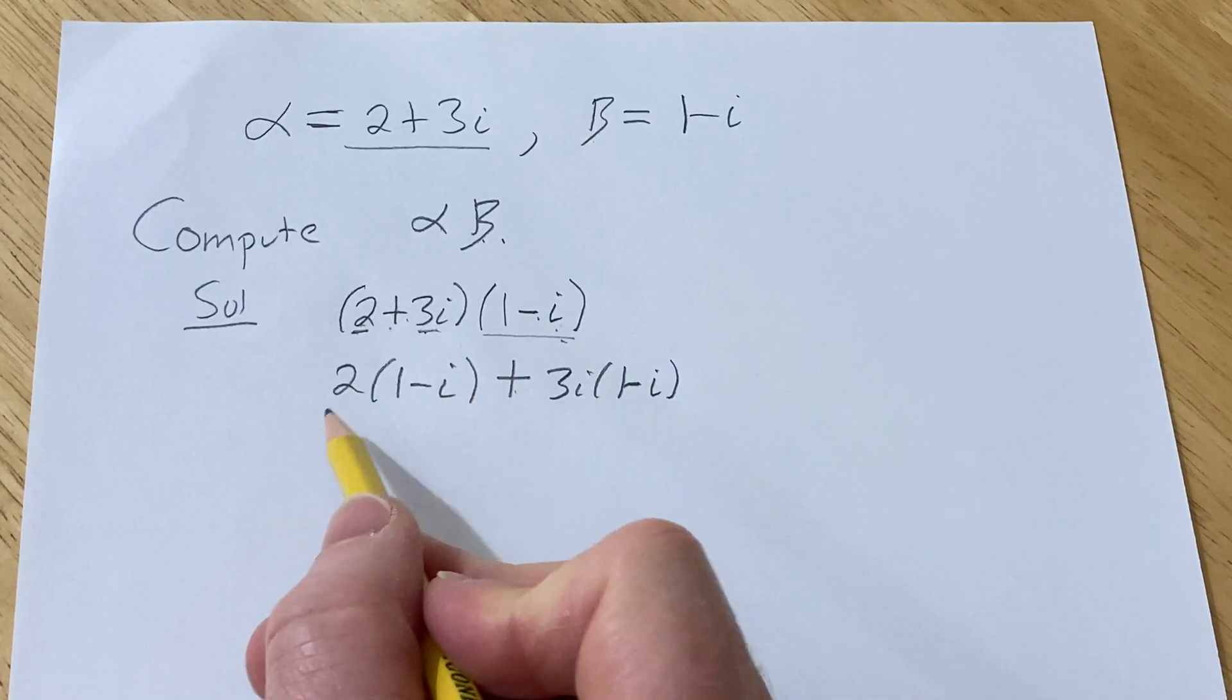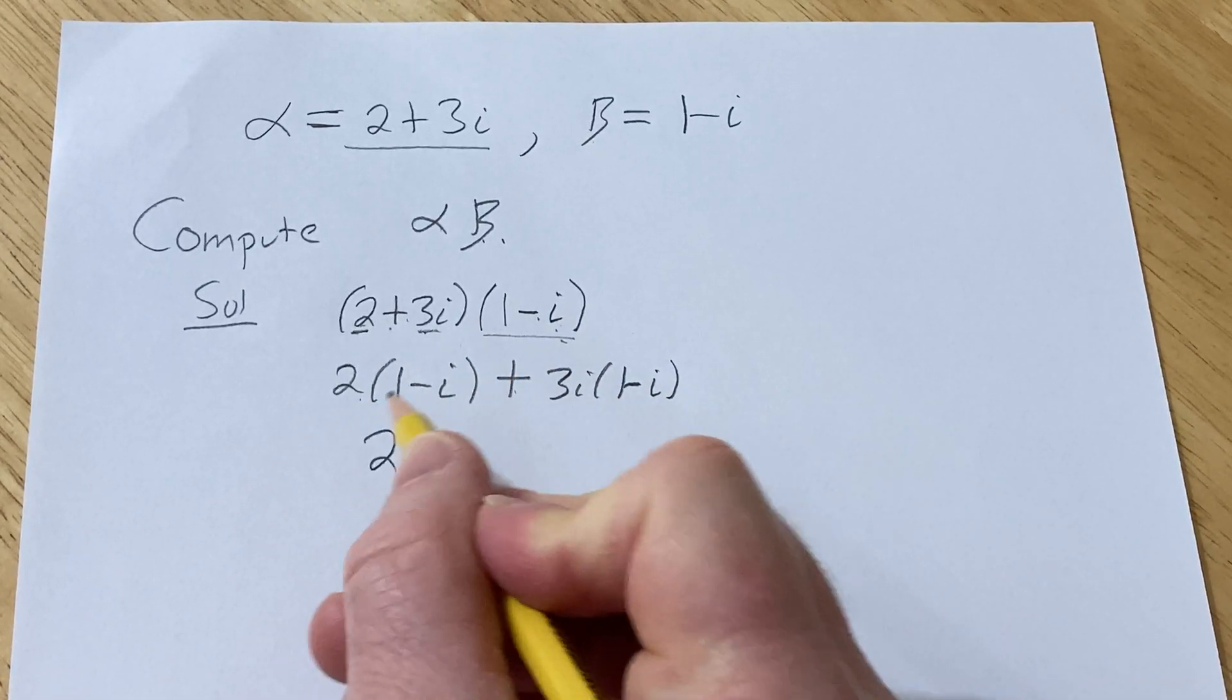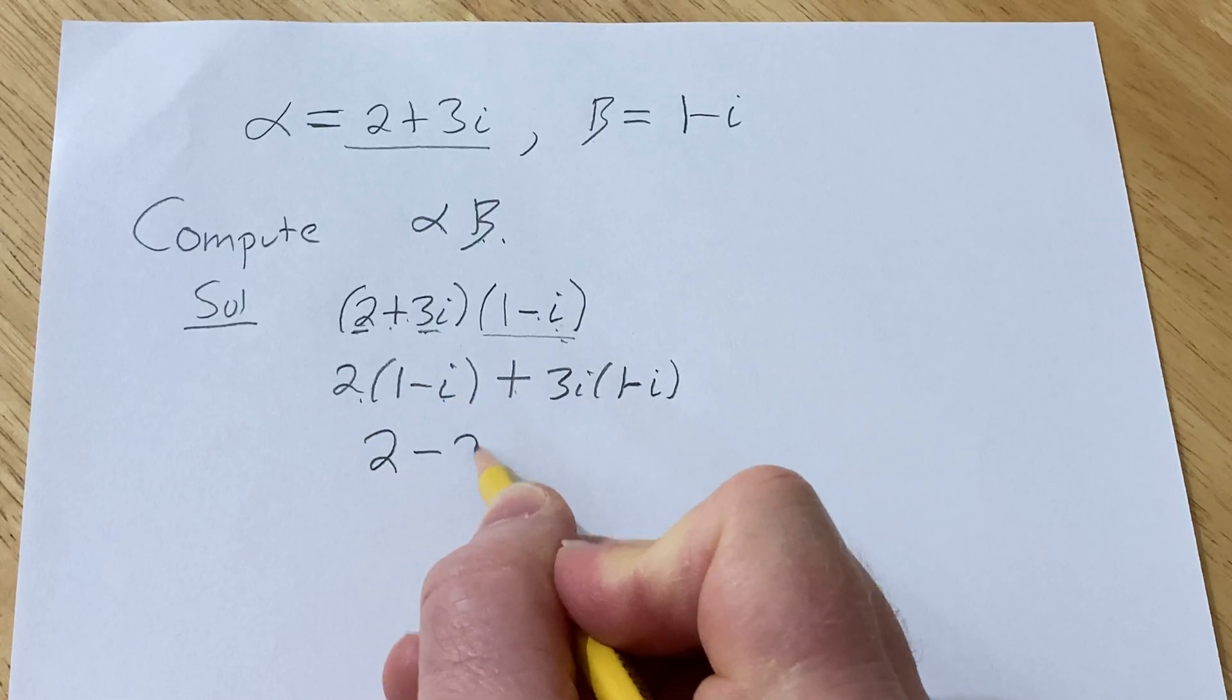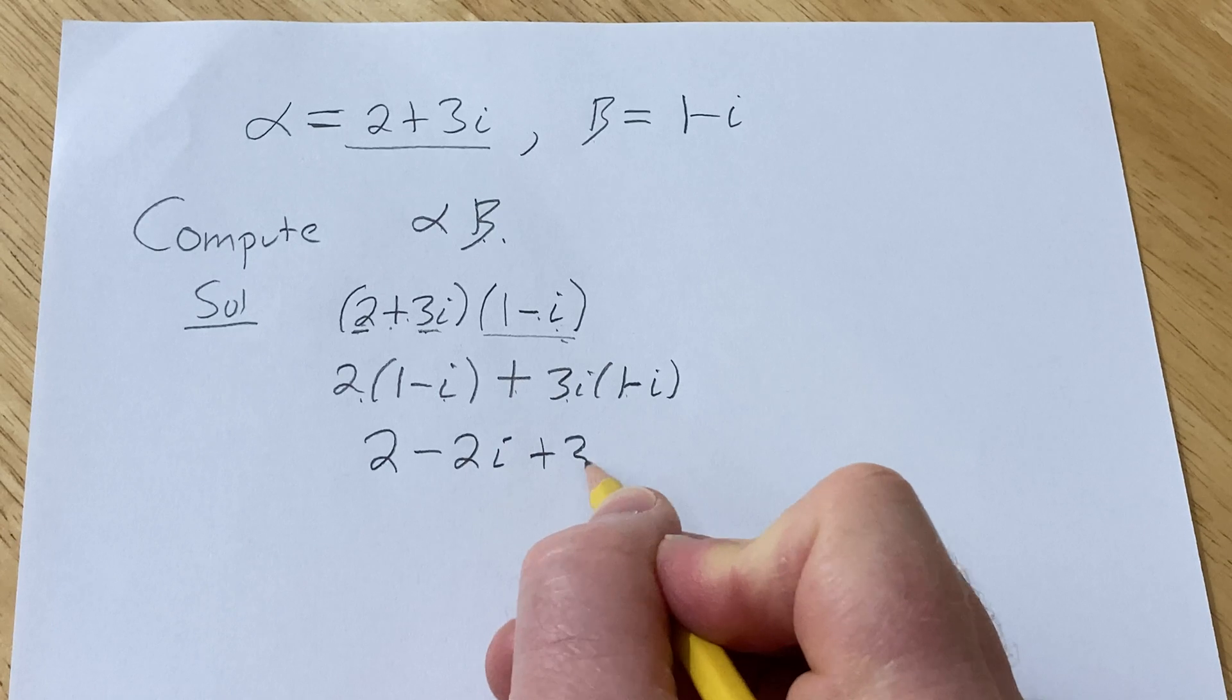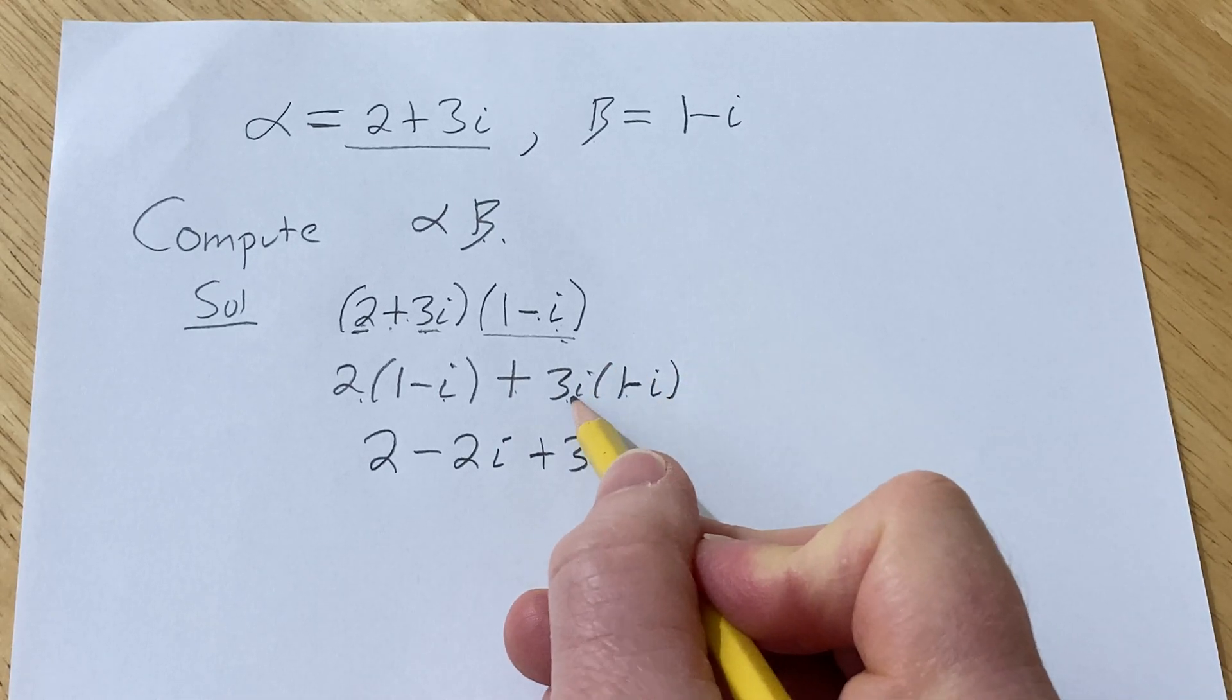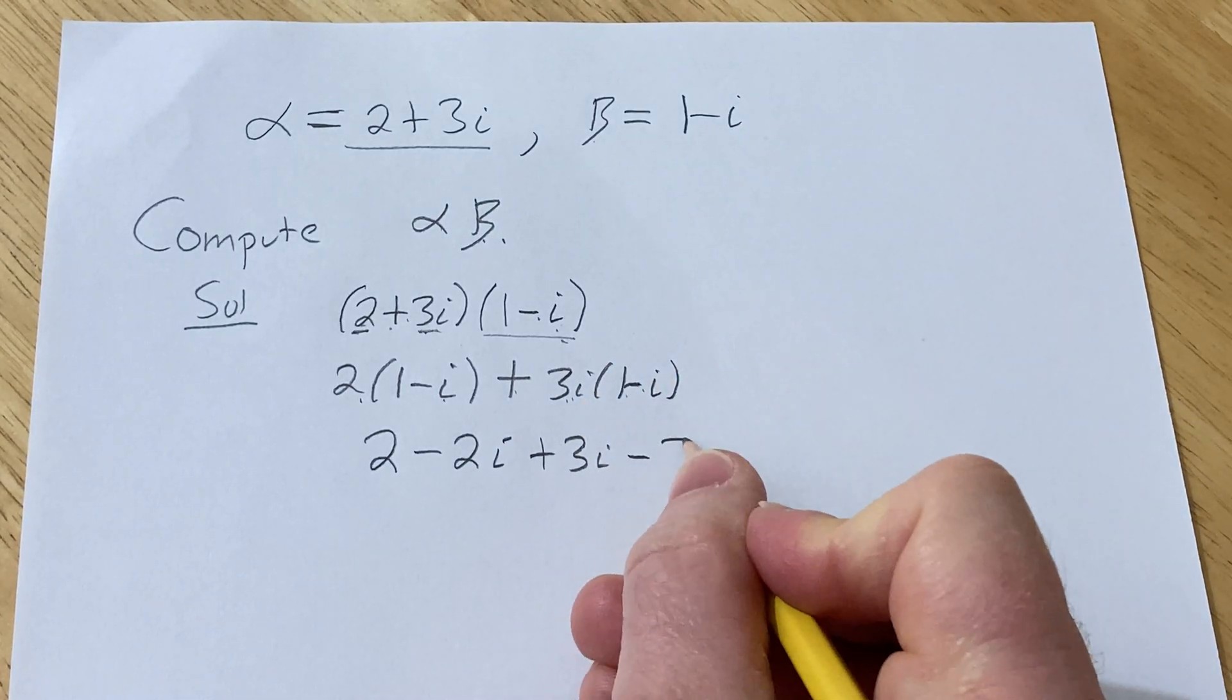Now we can distribute here. 2 times 1 is 2, 2 times negative i is negative 2i. 3i times 1 is 3i. And then 3i times negative i is negative 3i squared.